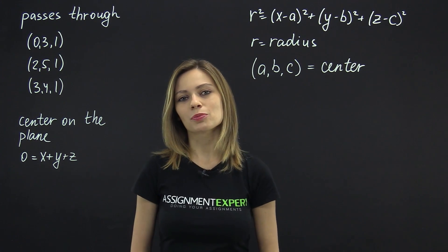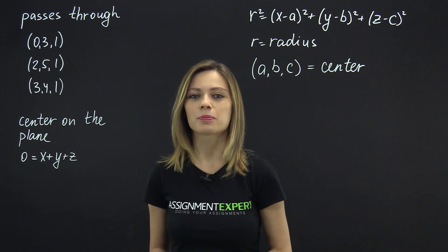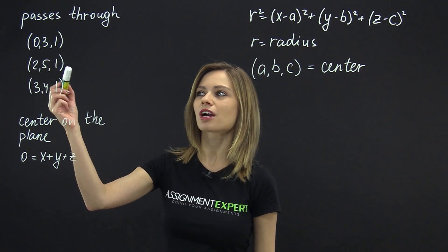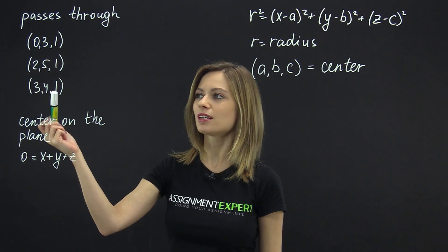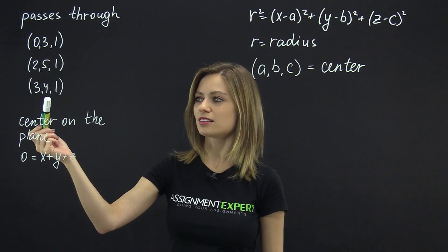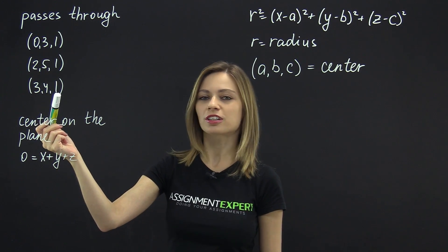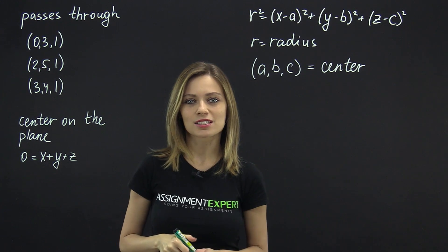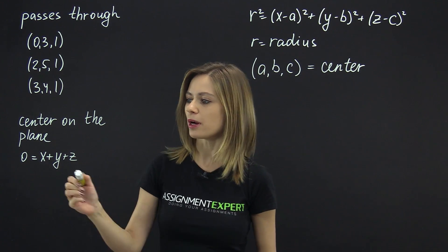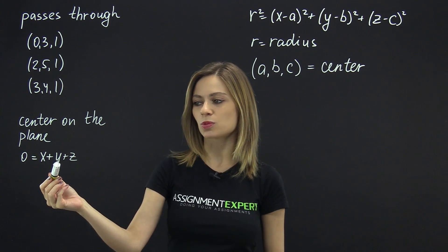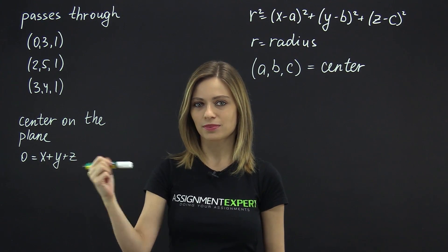Suppose that we have a sphere that passes through three points: (0, 3, 1), (2, 5, 1), and (3, 4, 1). Also, we know that its center lies on the plane given by x plus y plus z equals 0.